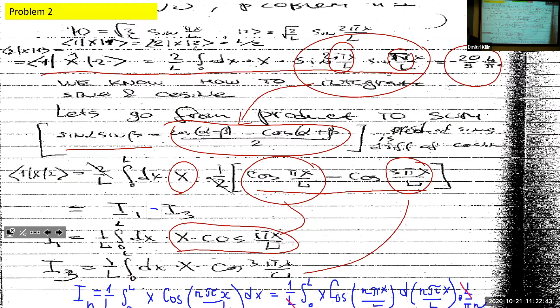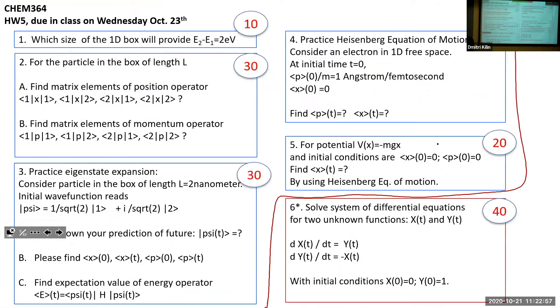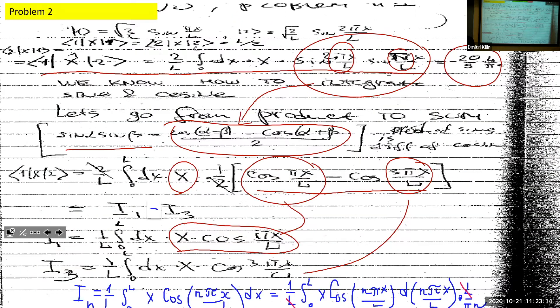Number two: some of you did this assignment much better than I could. We have a particle in the box and we need to find matrix elements of the position operator between the first and second states. If the particle is in state one and you look for the matrix element between one and one, or if it is in state two and you look for the matrix element between two and two, it is just L over two.